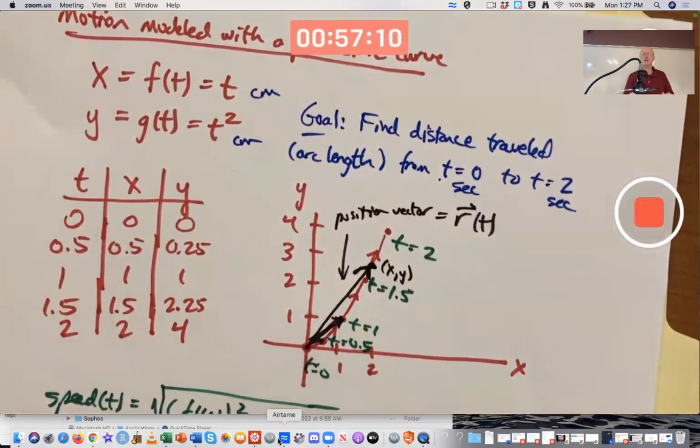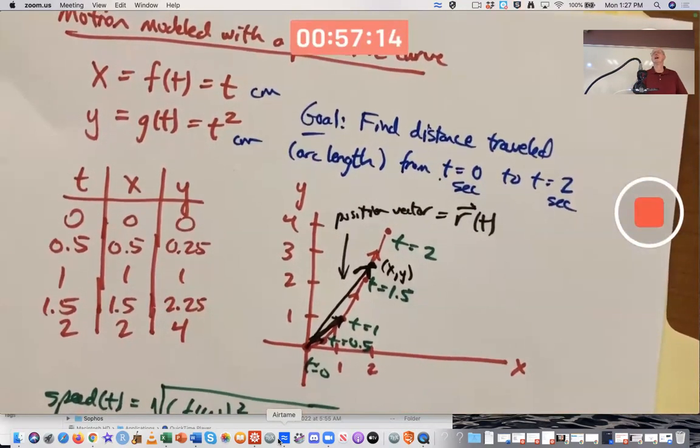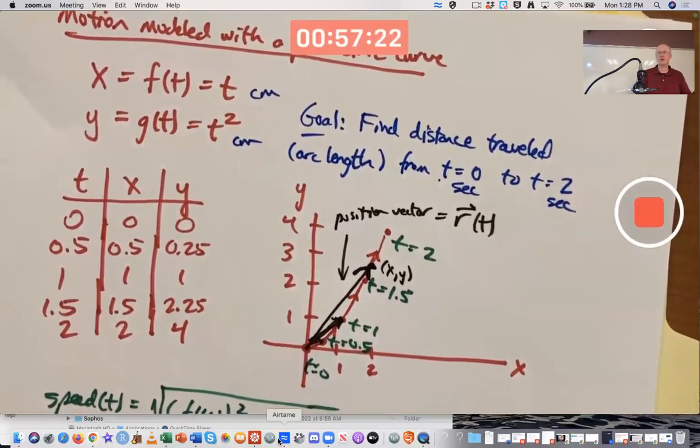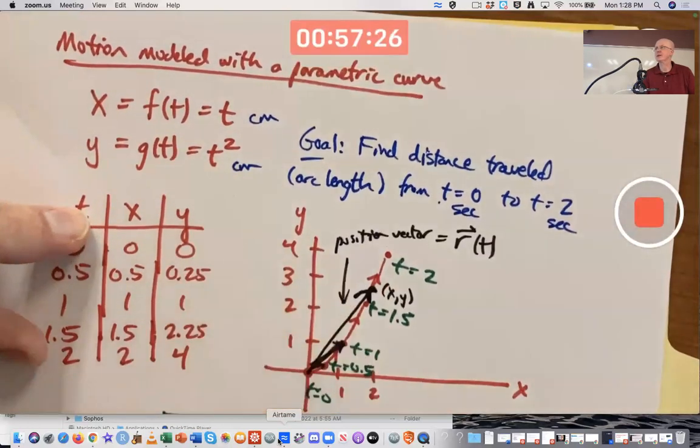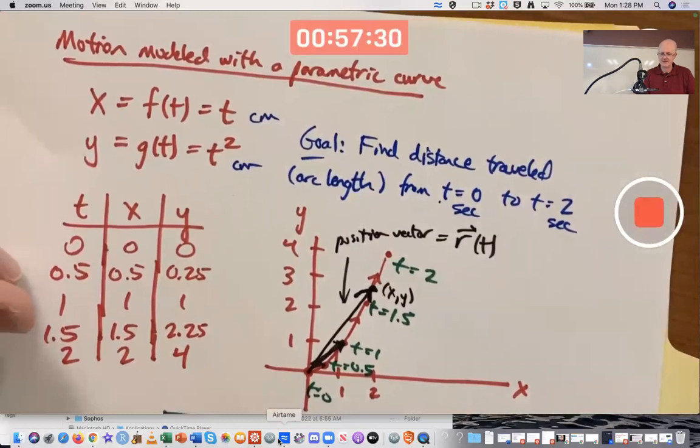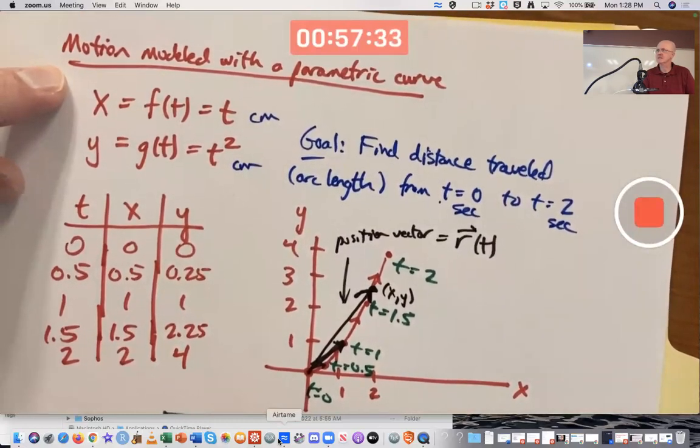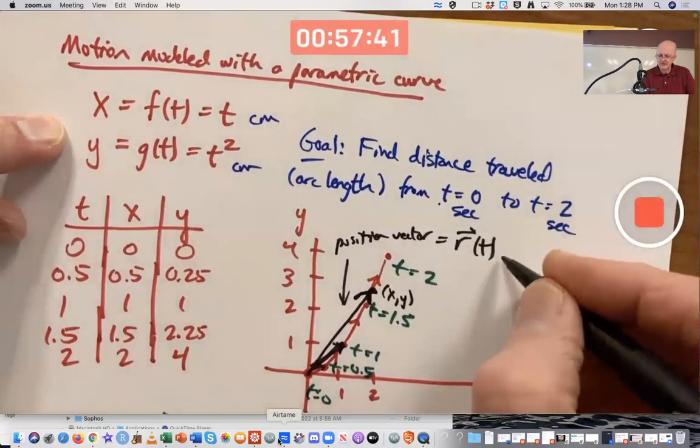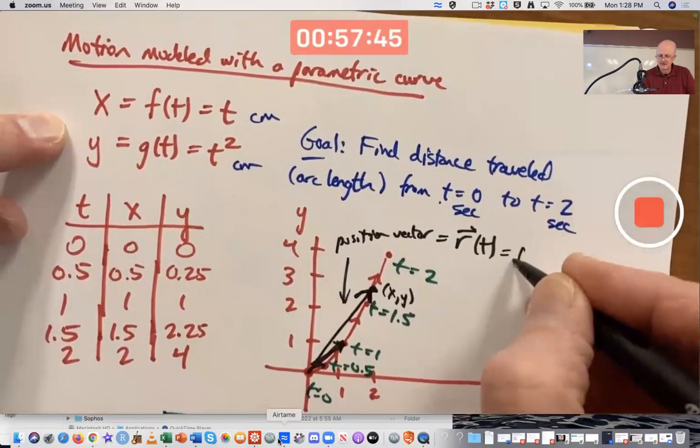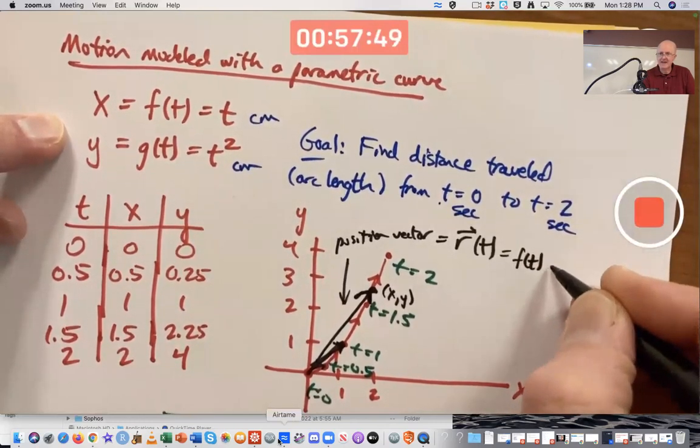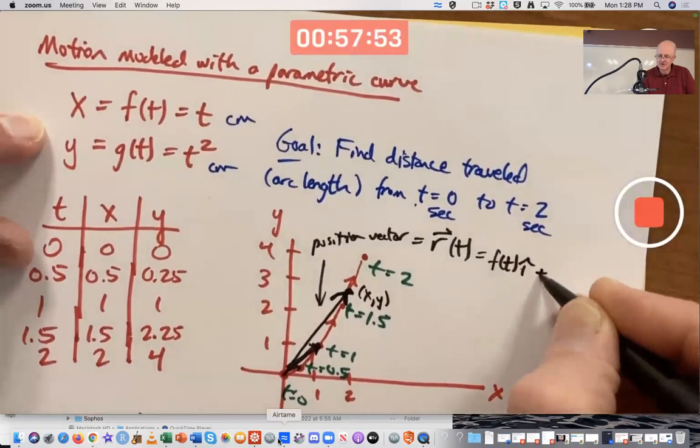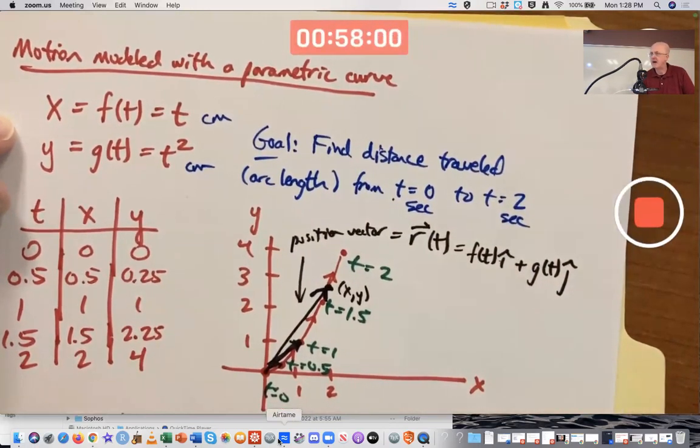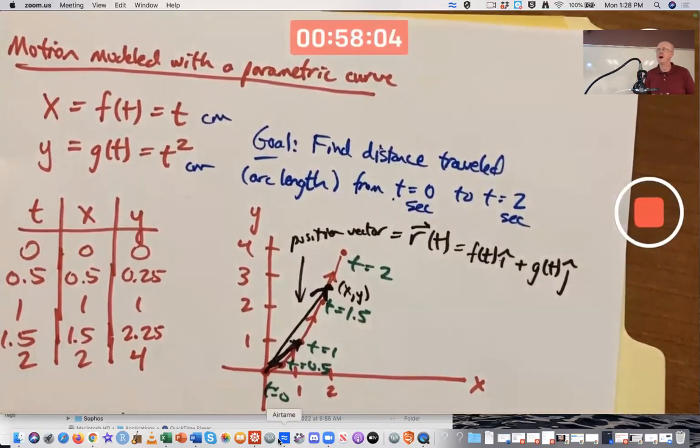These functions are called the components of the vector. Essentially, the x displacement in the horizontal direction and the y displacement in the vertical direction. And the way we write the vector in the abstract with those components is we put the first component in front of a symbol called I hat and written like this, and the second component, G of T, in front of another symbol called J hat and written like this. And you don't typically bother with the dots about the I and the J.